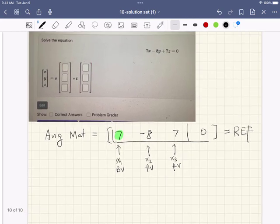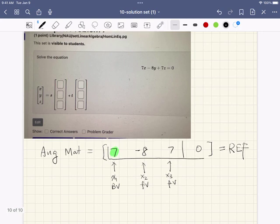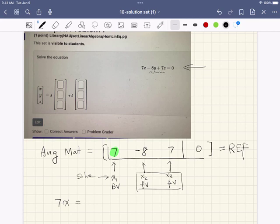Then next, we want to move X2, X3 to the other side of equality. In other words, I want to solve for X1, basic variable, from the original equation. So, 7X equals, if you move the other two terms to the other side, it will be 8Y minus 7Z.